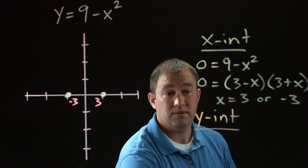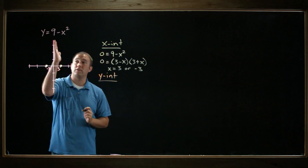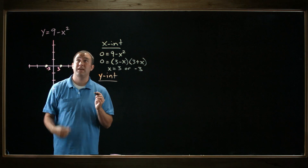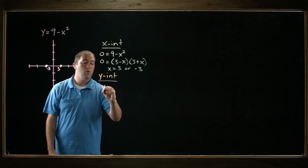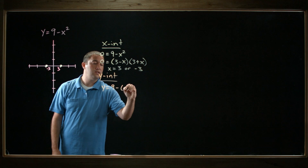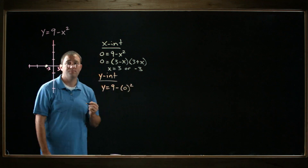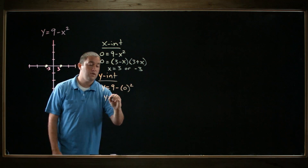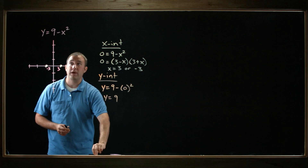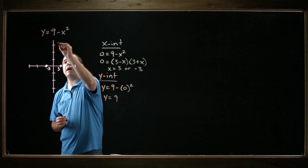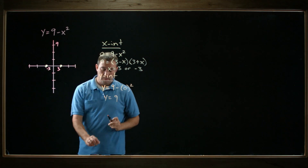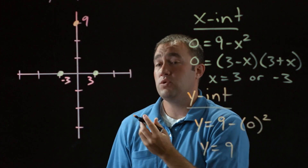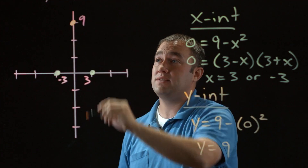Now I want to do the same thing for the y-intercept. The y-intercept is where this function hits the y-axis — that's where x equals 0. So I'll take this function and replace x with 0, and I'll have y equals 9 minus 0 squared. Since 0 squared is just 0, I get y equals 9. I'll put that over here on my graph with a little 9 right up there.